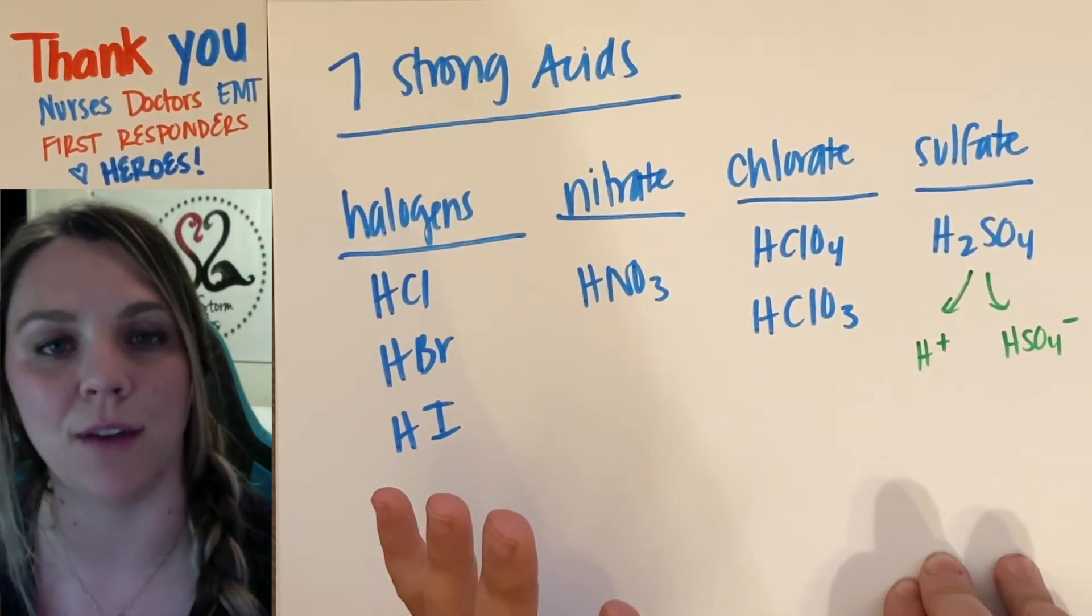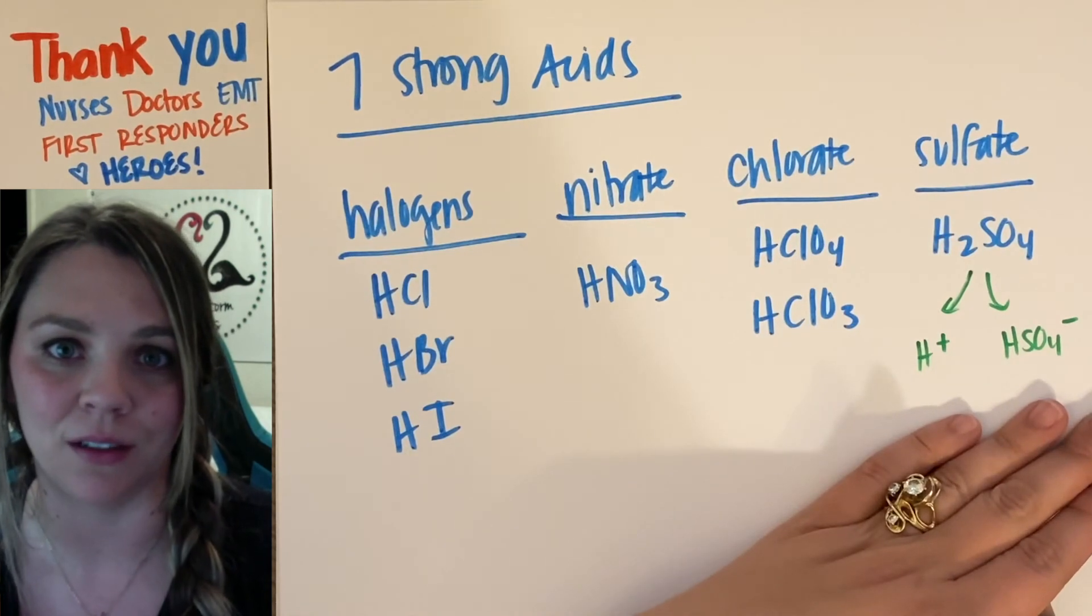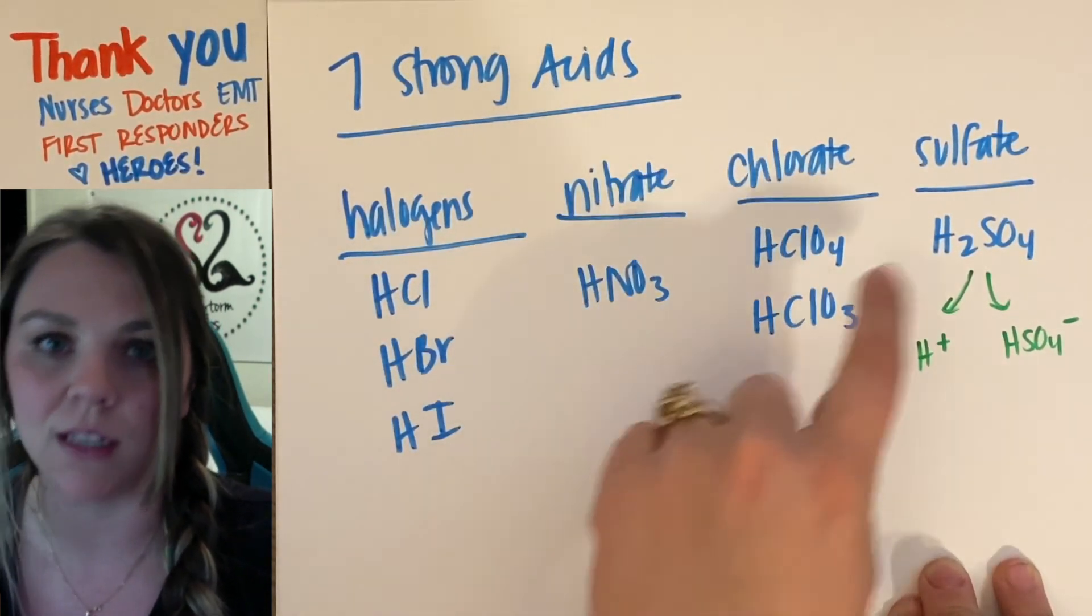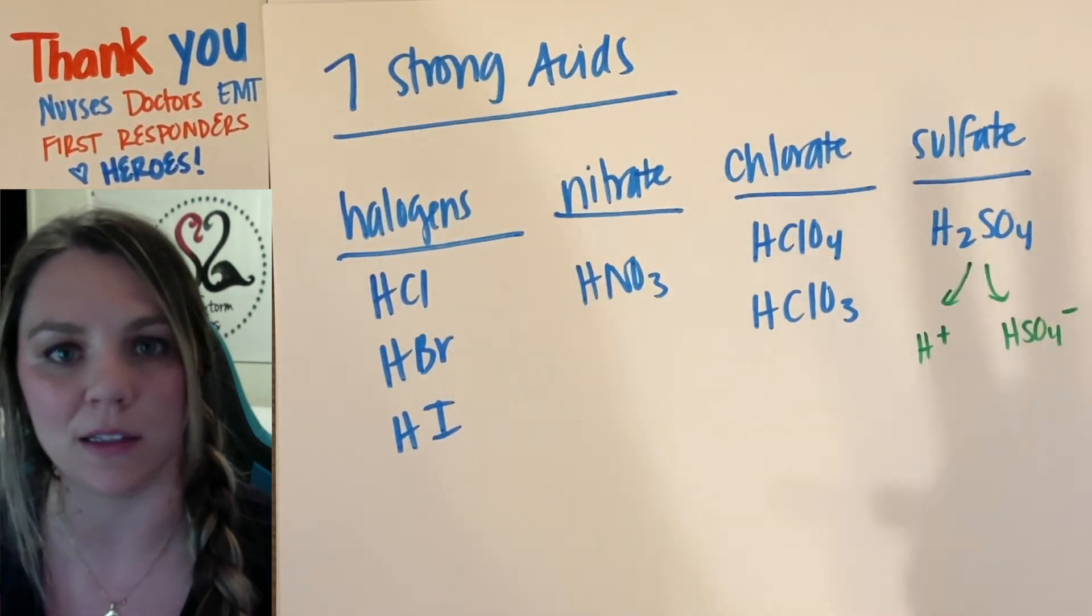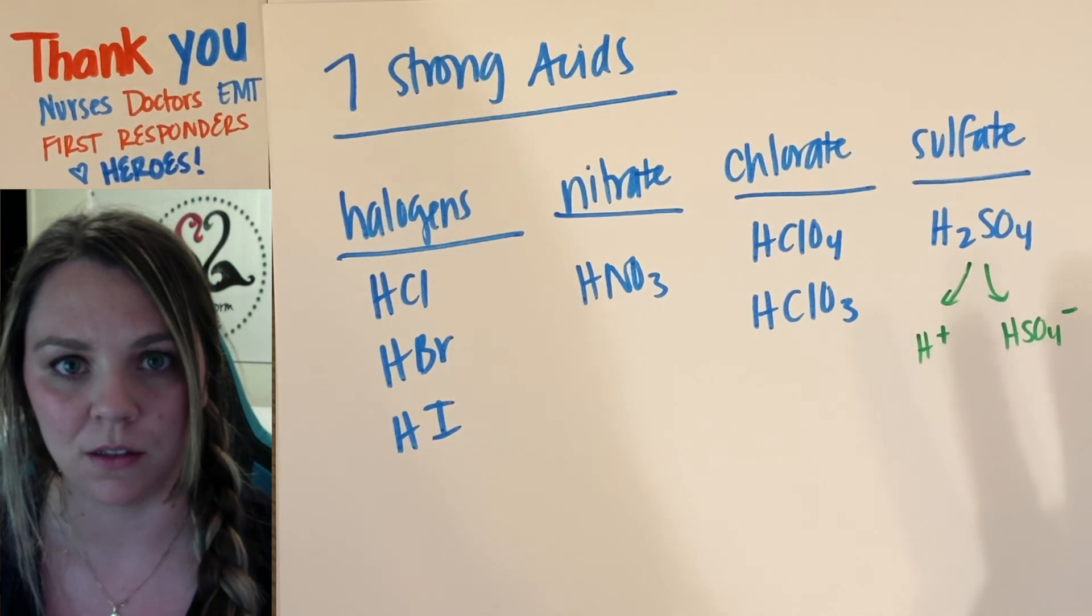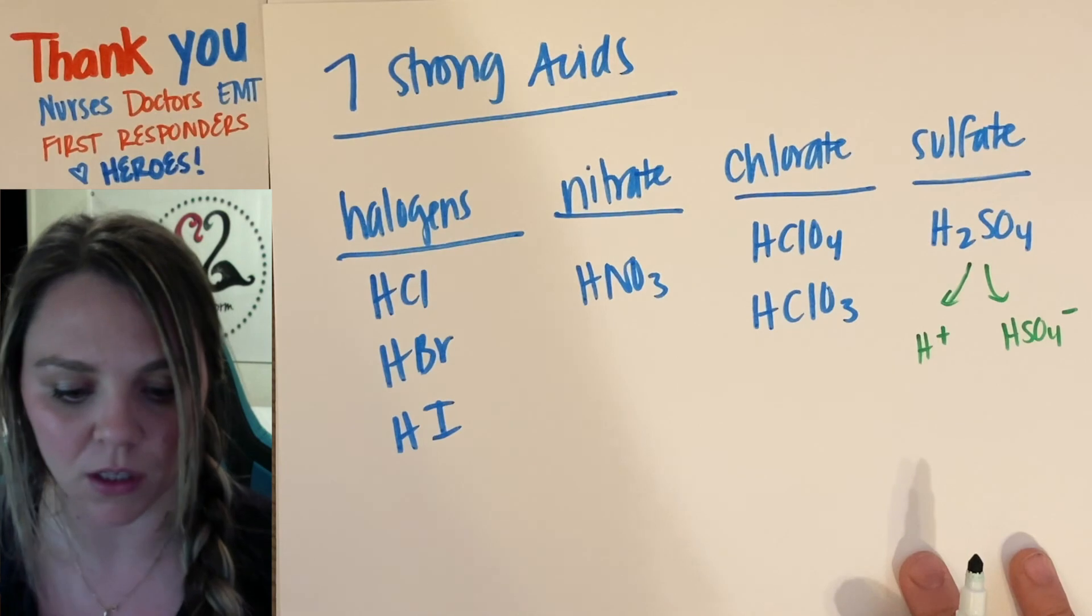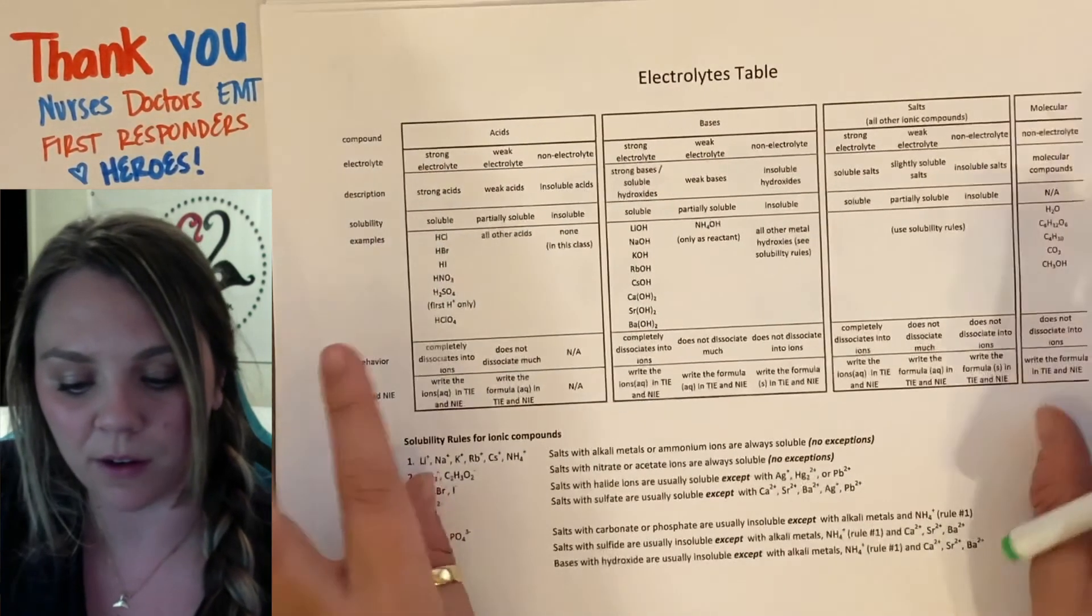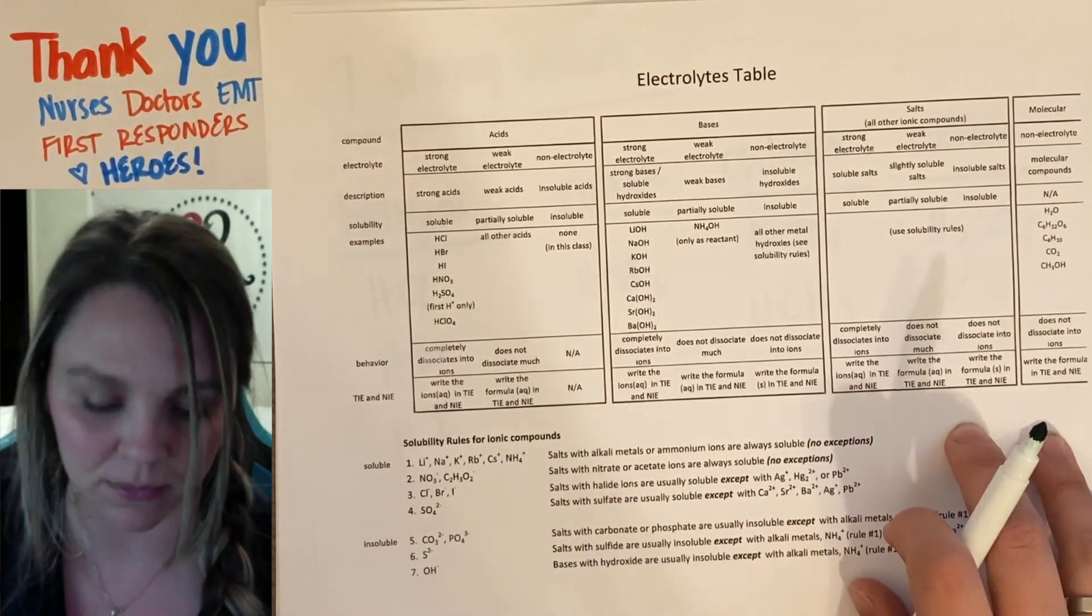So how to determine if you have a strong or a weak acid? Basically, memorize these seven. Which is not that hard. You've got halogens, nitrate, two chlorates, and sulfate. If you can remember that, you're good, because every other acid is a weak acid that we will deal with in regular chem, in chem 2A. So that's that. Hopefully that will help you figure out your electrolyte table for the acid section. Good luck.